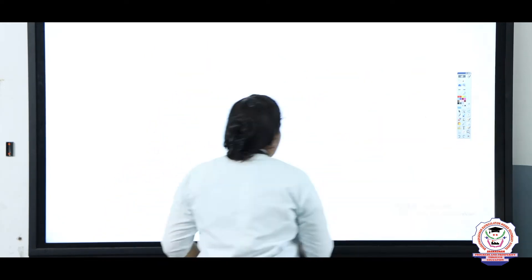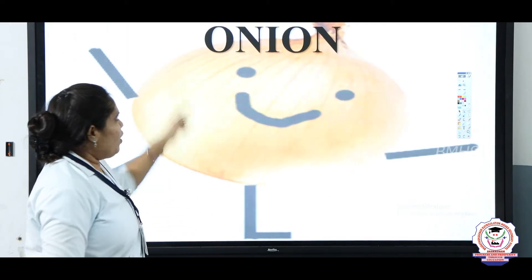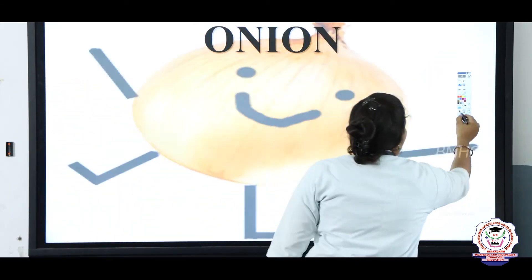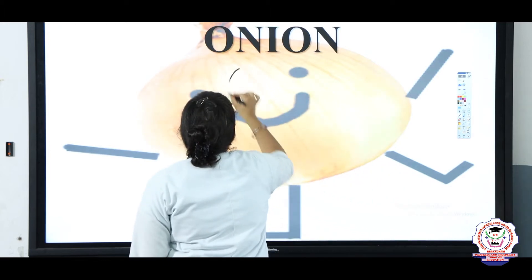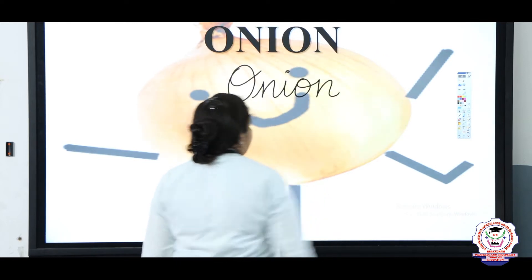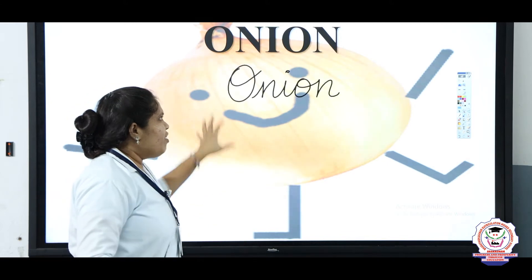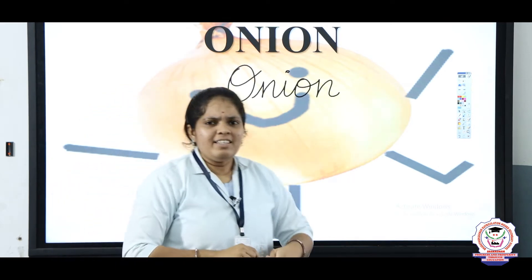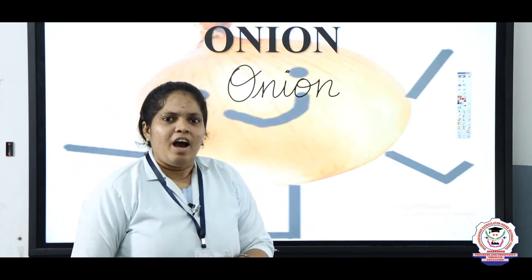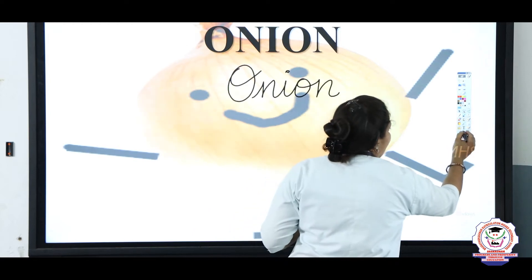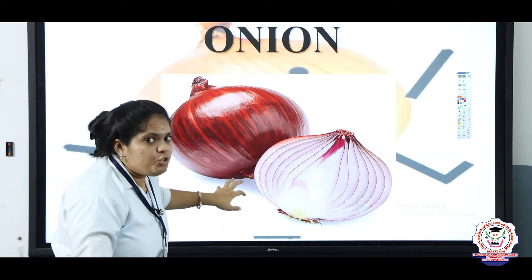Now look here, my dear children. What is this? Can you see this image? Yes, it is an onion. Let's write it: O-N-I-O-N, onion. From this, can you tell what type it belongs to? Can you guess? Very good — it looks like a bulb. Yes, it belongs to the bulb shape. Onions look like a bulb shape.